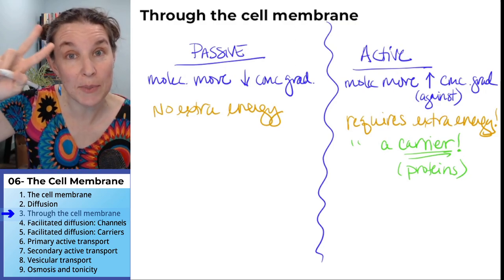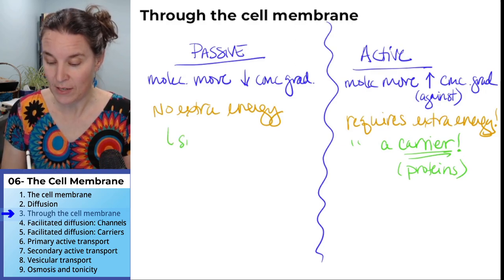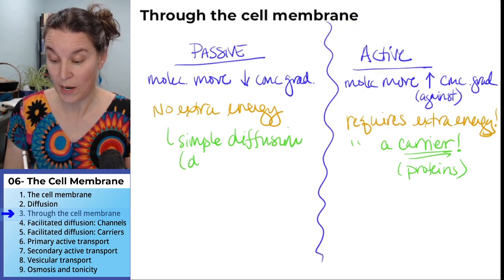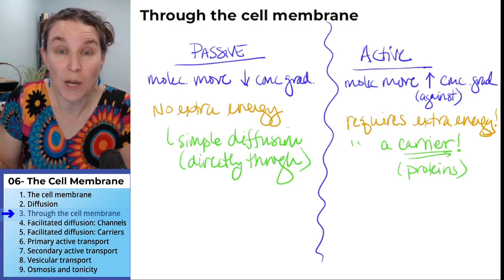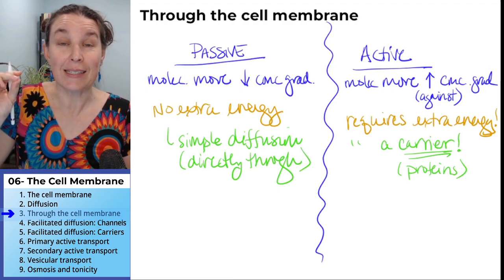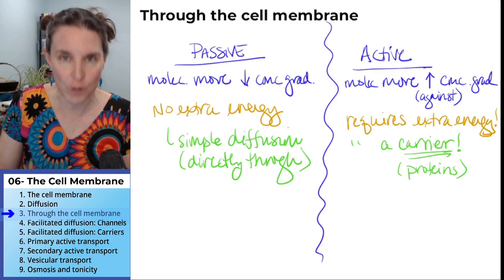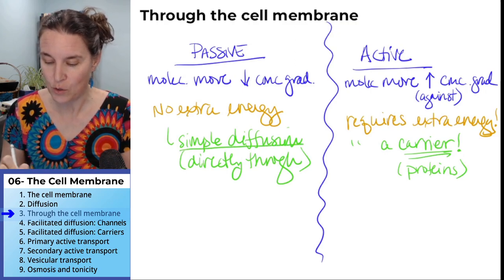There are two types of passive transport. We have simple diffusion — that's just directly through the cell membrane. Small things and lipophilic, hydrophobic things can diffuse right through the cell membrane. That's simple diffusion.